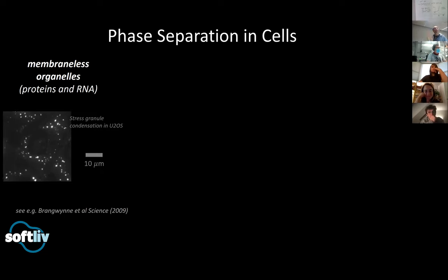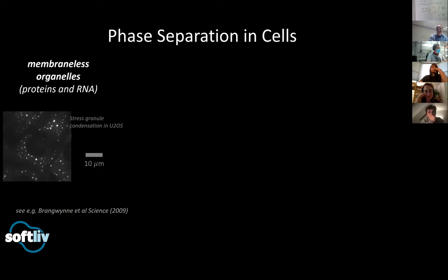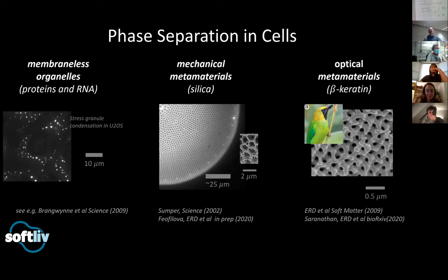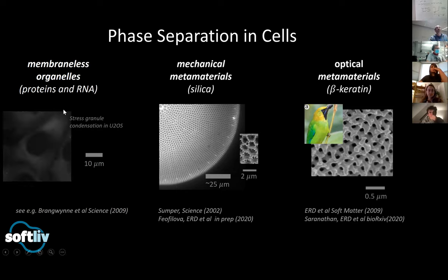I don't think it should just be biologists that are excited about soft matter physics — soft matter physicists and material scientists should be really excited about cell biology too. I want to give two examples that were motivating for me to dig deeper into the phase separation of cells. The punchline is that cells can make elaborate functional structures — they can make mechanical metamaterials. Here's a highly organized three-dimensional silica structure that was hypothesized by Sumper to be made by phase separation.